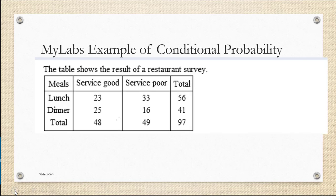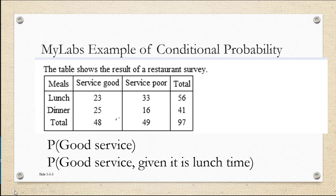This example comes from MyLabs. It's an example of conditional probability, but you don't have to know the definition of conditional probability to answer it. We're given the results of a survey — some customers at a restaurant were surveyed as to whether the service was good or poor, and their answers were recorded along with whether they were a lunch customer or a dinner customer. We'd like to find the empirical probability that the customer gets good service and compare that to the empirical probability that they get good service given that we know it was lunchtime.